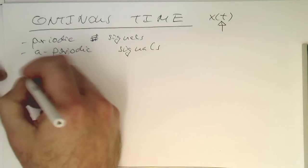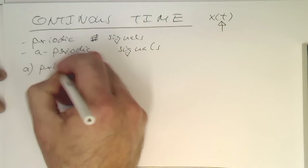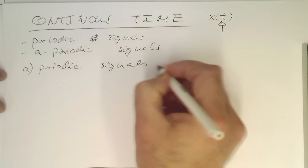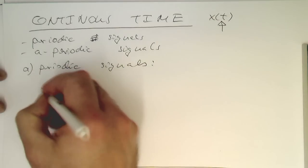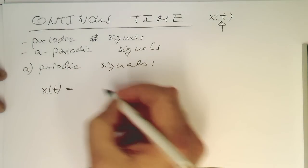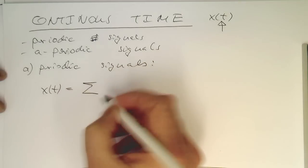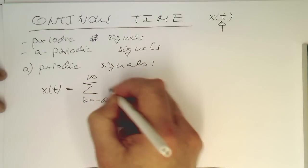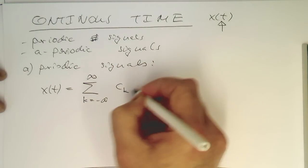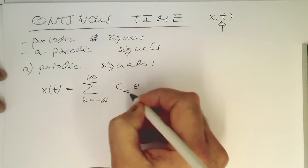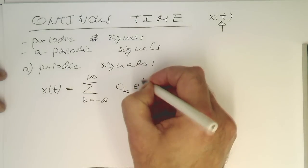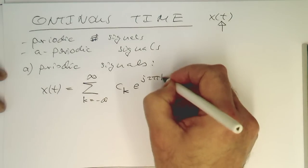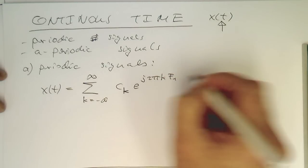Let's start first with periodic signals. If you have a periodic signal, we can write this as an infinite sum. We compose it essentially of waves. We have a weighting factor ck, and then we define it as complex phasors: j 2π k f1 t.